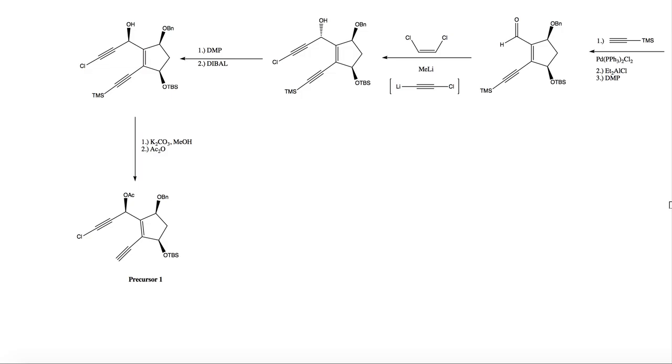Next, potassium carbonate, methanol, pretty common to remove TMS group here. So then acetic anhydride gives the acetyl protected alcohol here, and that is the synthesis of precursor 1.